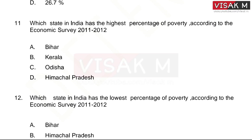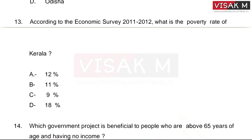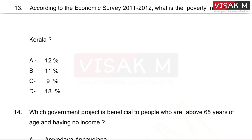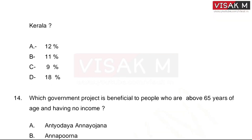Options for highest poverty state: Bihar, Kerala, Odisha, Himachal Pradesh. Then, according to the Economic Survey of 2011–12, what is the poverty rate of Kerala? Options: 12, 11, 9, 18. The right answer is option A, 12%.